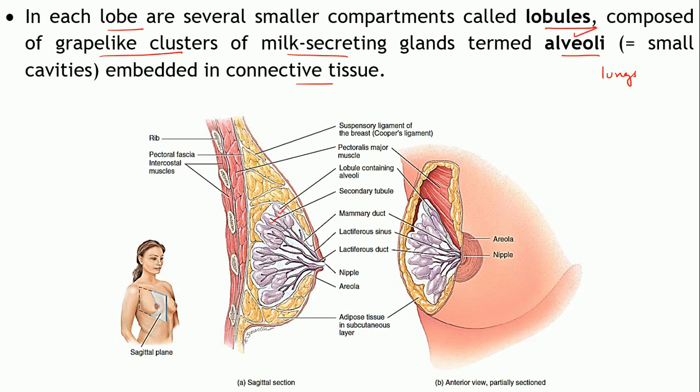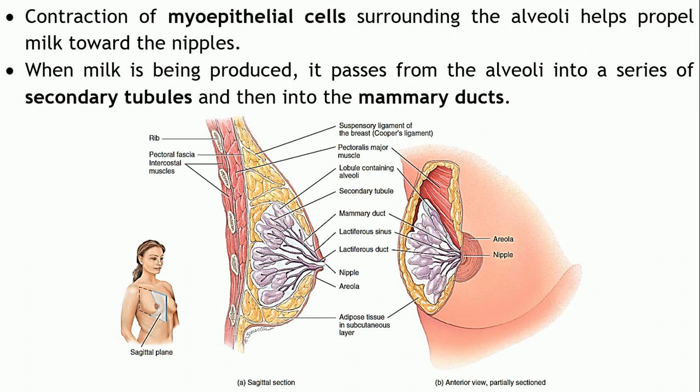The alveoli are responsible for production of milk. Contraction of the myoepithelial cells surrounding the alveoli helps propel milk further into the duct system towards the nipple and exterior. The milk passes from the alveoli into a series of small tubules called secondary tubules.